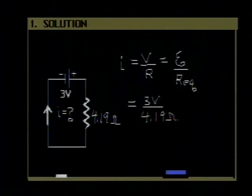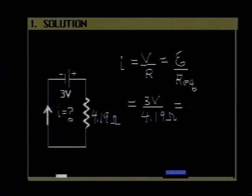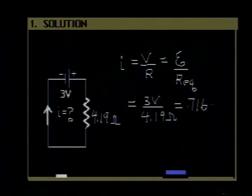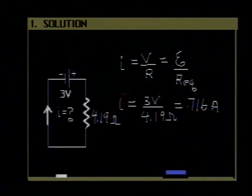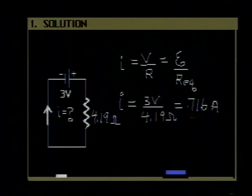And that gives us 0.716 amperes. So that is the current through the battery. I'm rounding my answers to three significant figures. I'm assuming that all our data are accurate to three significant figures, whether stated or otherwise.